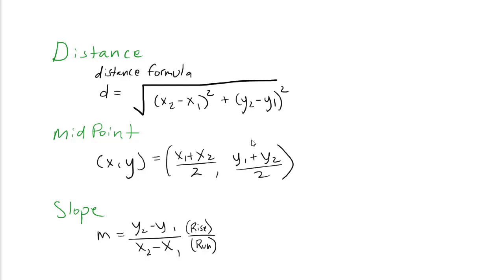We begin with the Cartesian coordinate plane, where every point is defined with an x and a y coordinate on our xy axes. We begin with the concepts of distance, midpoint, and slope. So let's jump right into it.